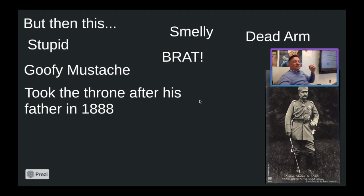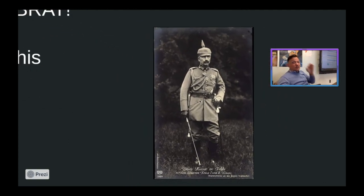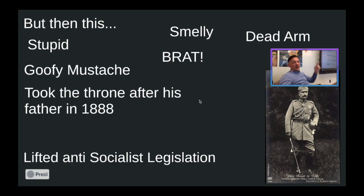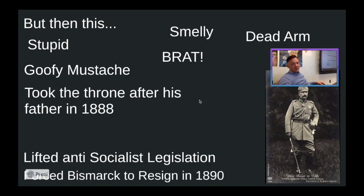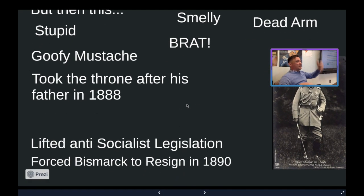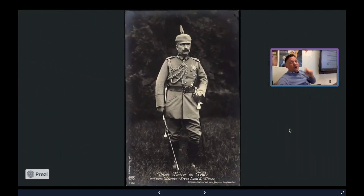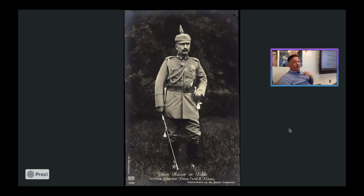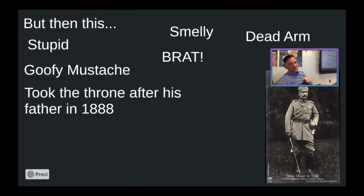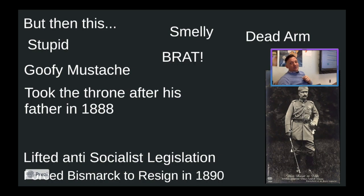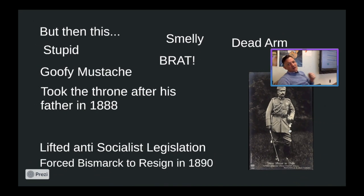When Wilhelm II took the throne, he started fighting against Bismarck, saying: you puppeteered my father, but I won't let it happen to me. He lifted all the anti-socialist legislation that Bismarck had passed to try and earn favor from the German people. And then he forced Bismarck to resign in 1890. Bismarck was the guy who, had he stayed in power, probably would have been able to prevent World War I. But Kaiser Wilhelm II had to come along and ruin everything for everybody.